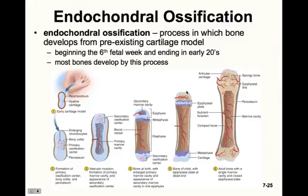In endochondral ossification, bone develops from a pre-existing cartilage model. The skeleton first develops in cartilage and then is replaced by bone. This process begins in the sixth week of fetal development and ends in the early 20s when bones finally stop growing in length. The mesenchyme develops into the body of hyaline cartilage, which is covered with a fibrous perichondrium.